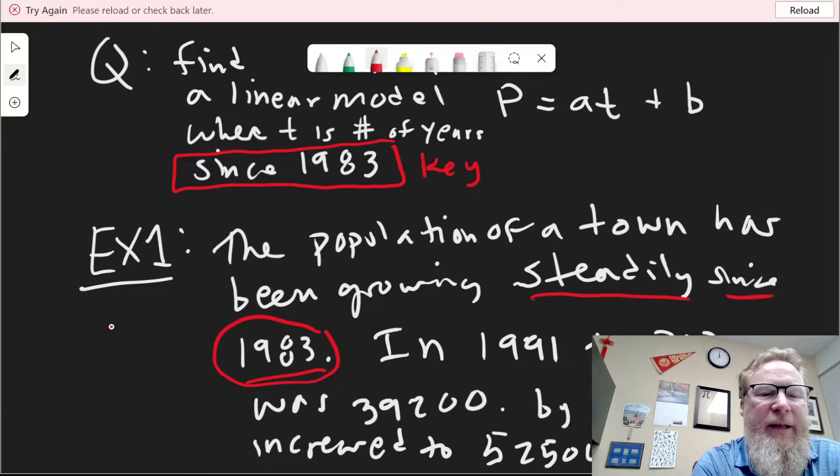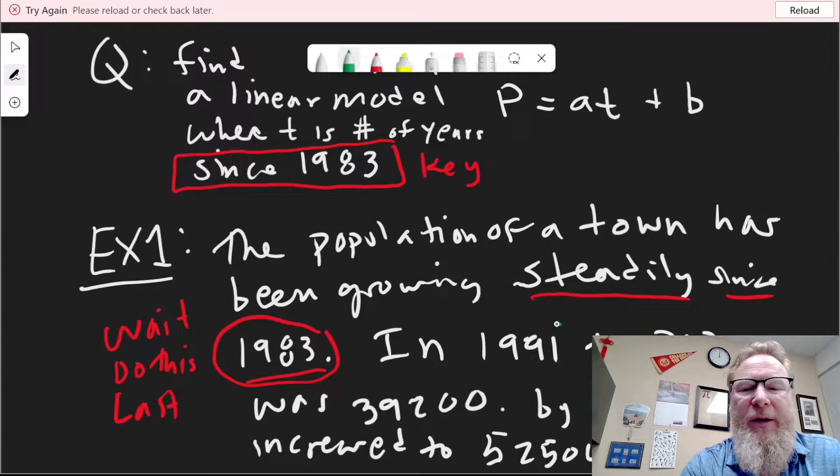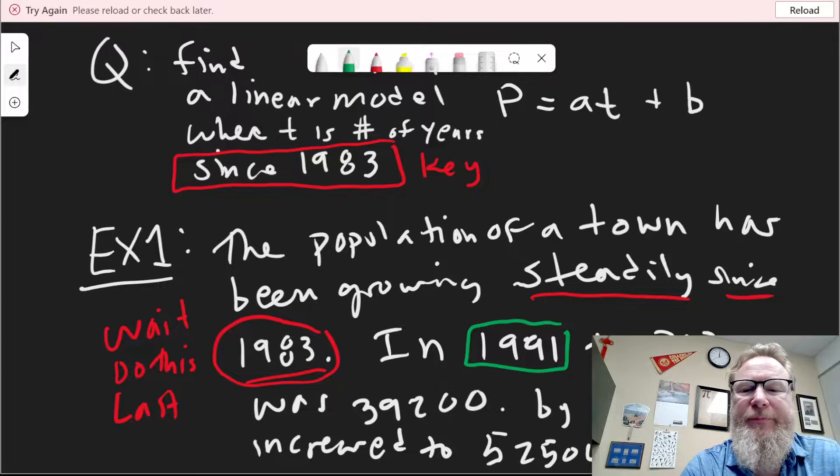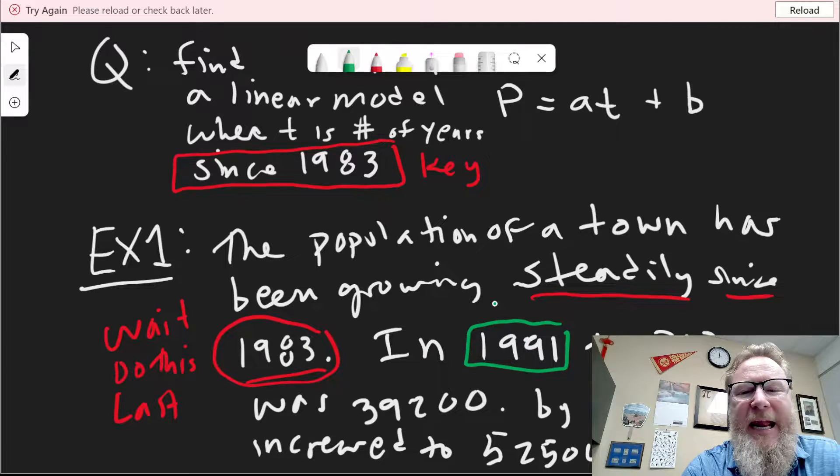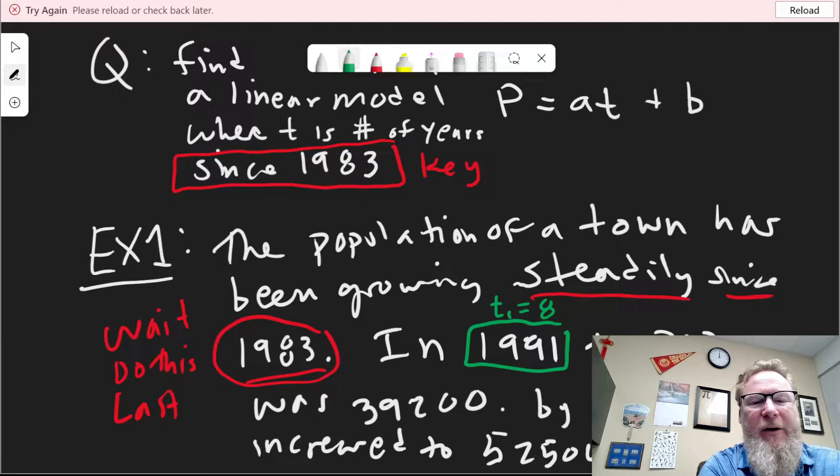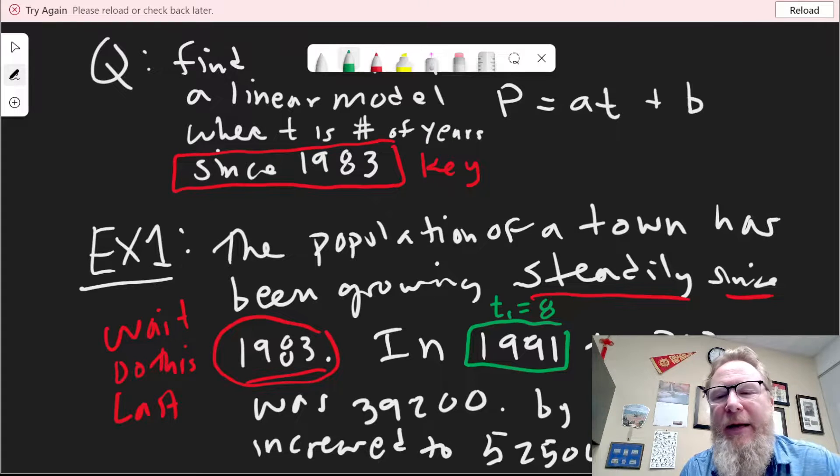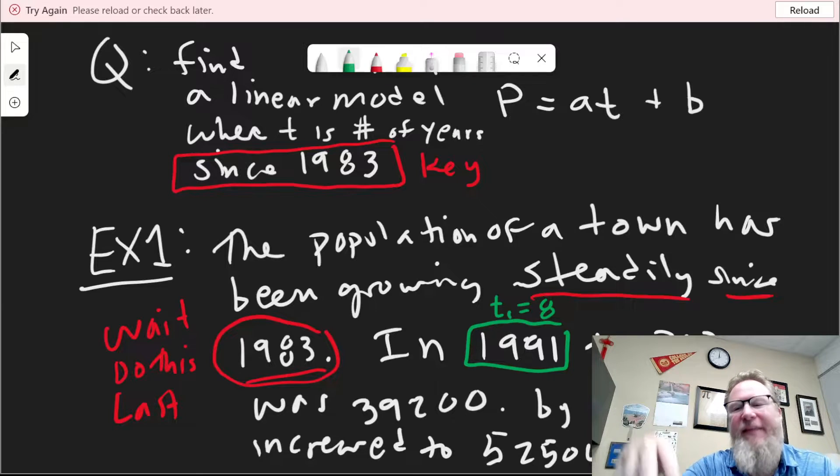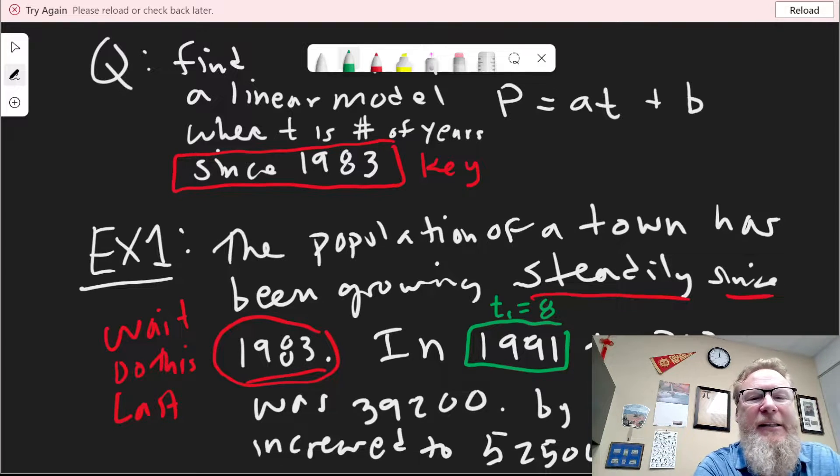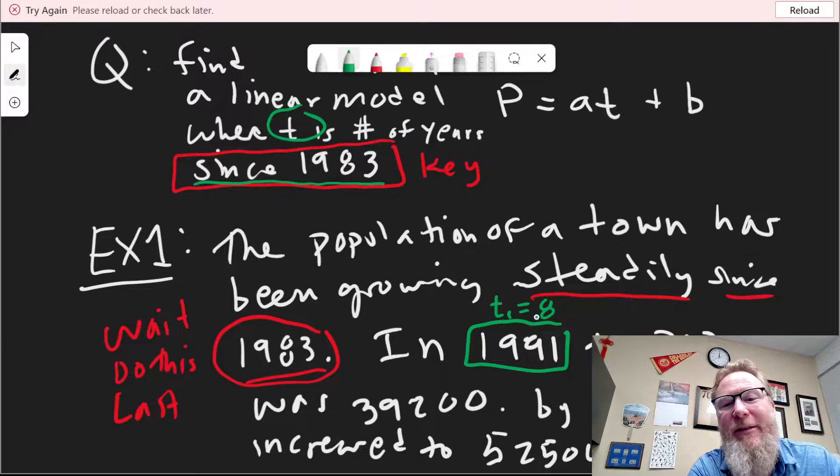So the question is to find a linear model. We're assuming that it's growing linearly. Everything in this section is linear. And the formula is the same. I already gave you this basic form or model: P equals AT plus B.